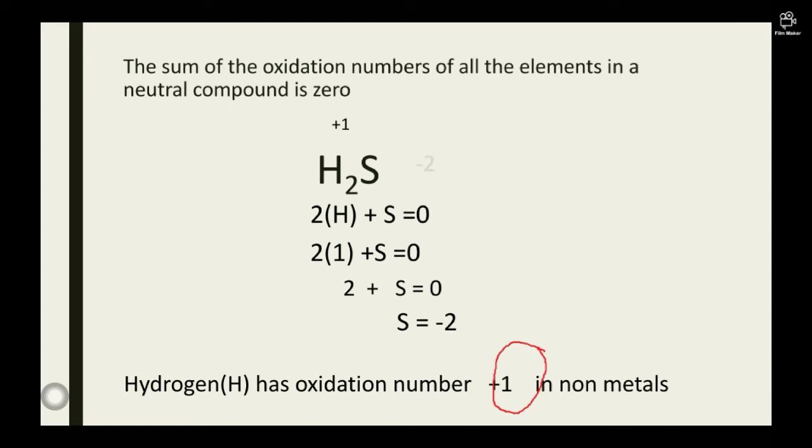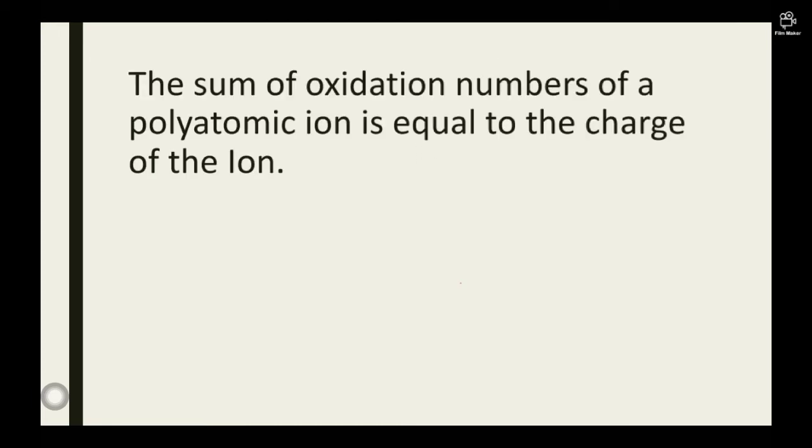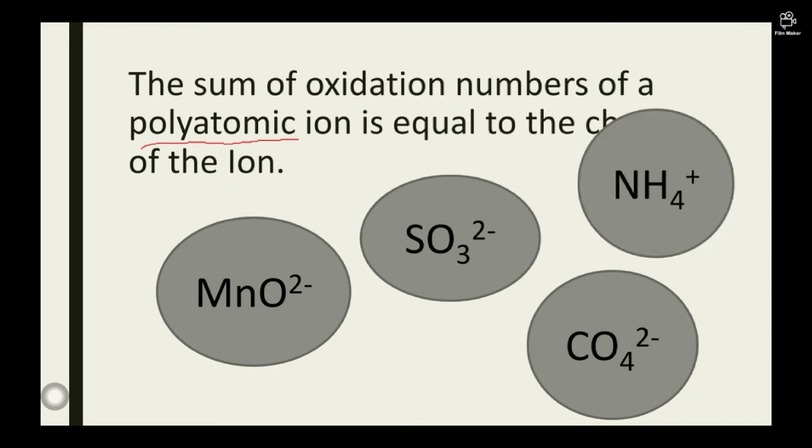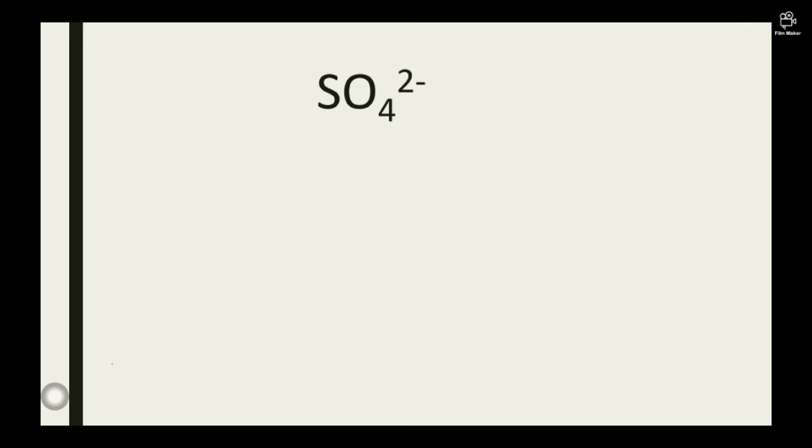Let's move to the final law. The sum of oxidation numbers of a polyatomic ion is equal to the charge of the ion. Unlike a monoatomic ion where it consists of one atom, a polyatomic ion consists of more than one atom. We have MnO2, SO3 2 minus, CO4 2 minus, and NH4 plus. They're all polyatomic. They have two different atoms and they're ions because they have charges, positive and negative. Let's do some calculation with this particular law.